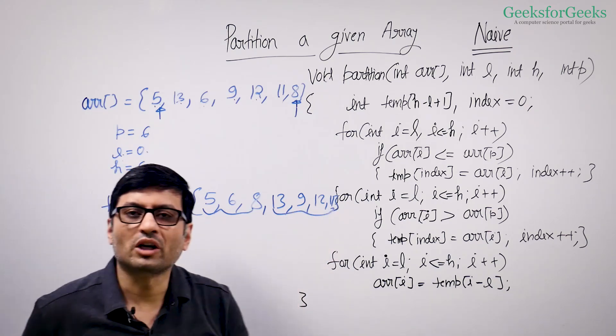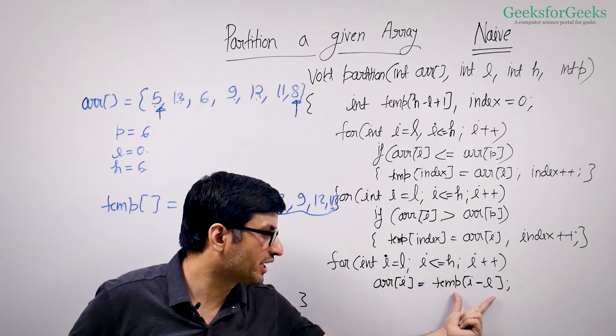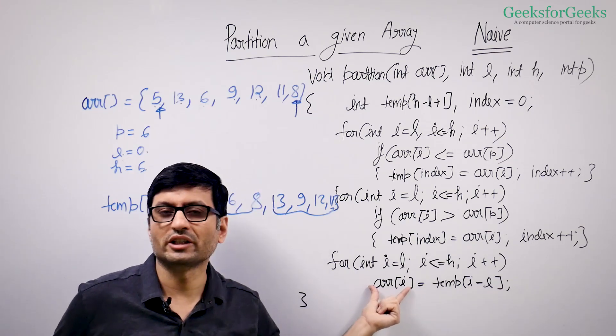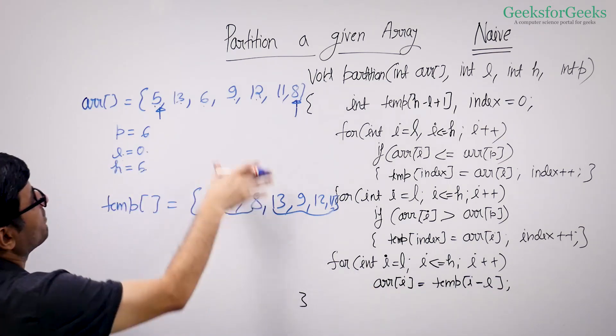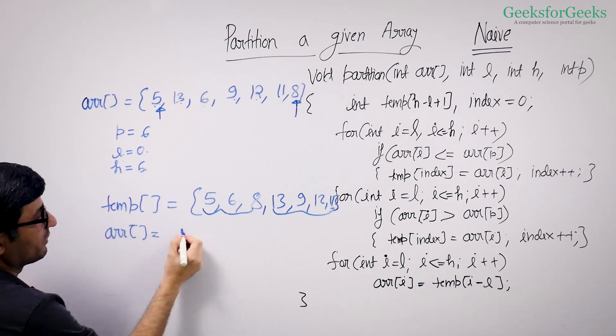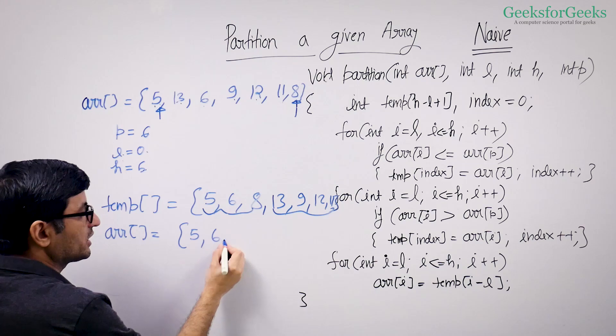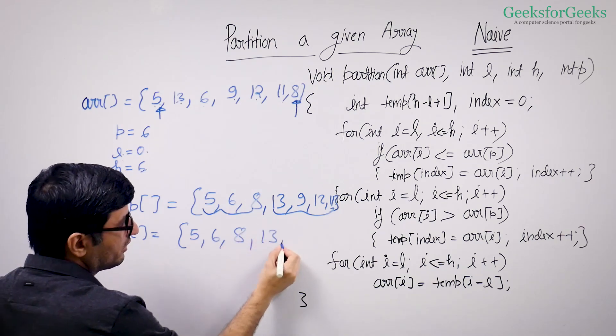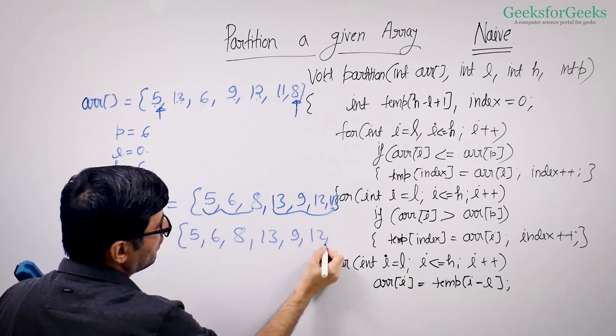So what all we need to do now is copy this temporary array back to our original array. So we copy these elements back to our original array and our original array becomes a copy of temp, which is 5, 6, 8, 13, 9, 12, 11.